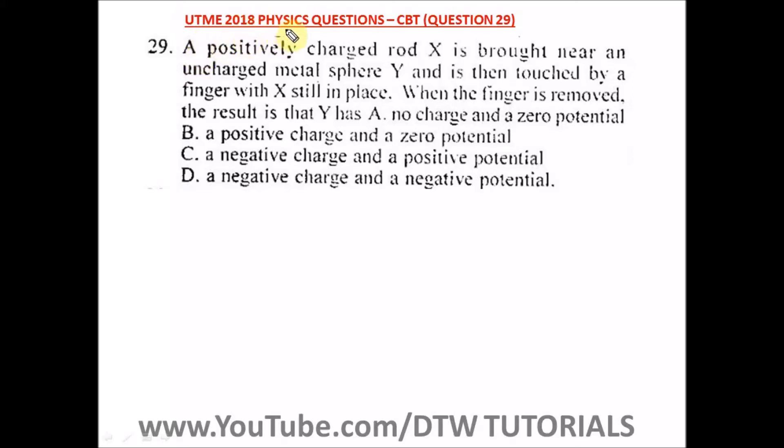Question 29 of the UTME 2018 Physics CBT, that's your JAMB 2018 Physics. It says a positively charged rod X is brought near an uncharged metal sphere Y. So we have a metal sphere here, Y.